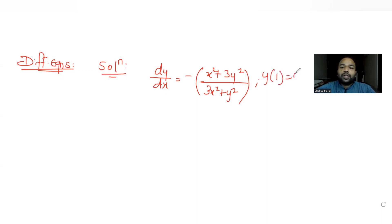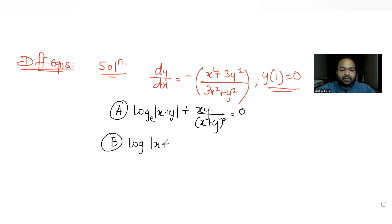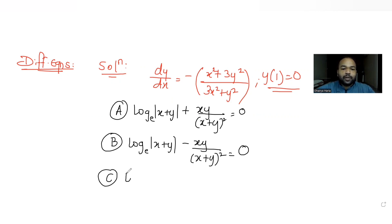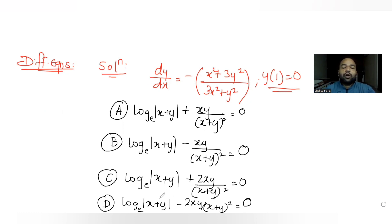One more condition is given: y(1) = 0. There are 4 options for the solution. Option 1: log|x+y| + xy/(x+y)² = 0. Option 2: log|x+y| − xy/(x+y)² = 0. Option 3: log|x+y| + 2xy/(x+y)² = 0. Option 4: log|x+y| − 2xy/(x+y)² = 0. We need to figure out which one is the correct solution.